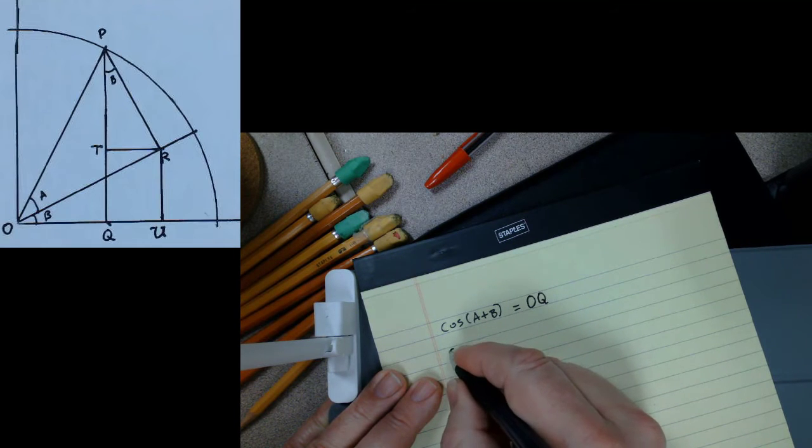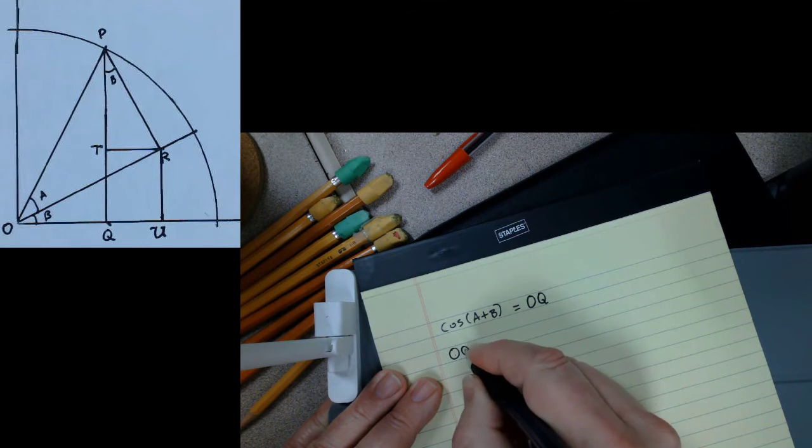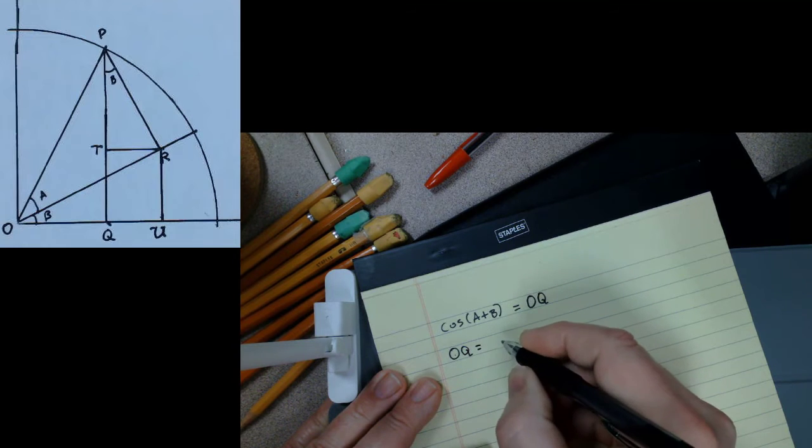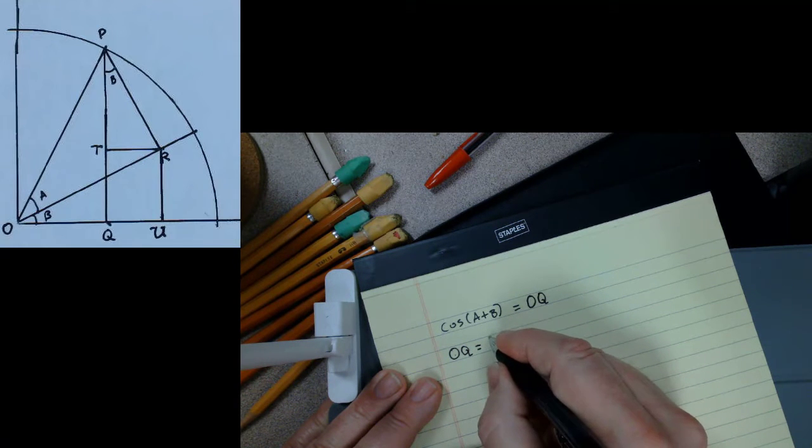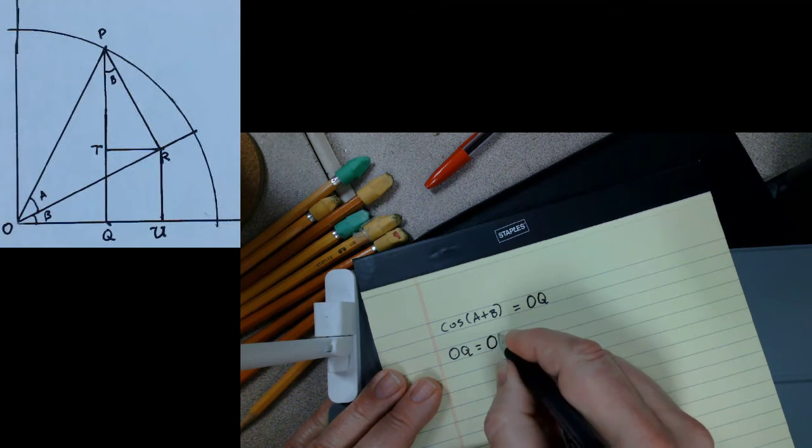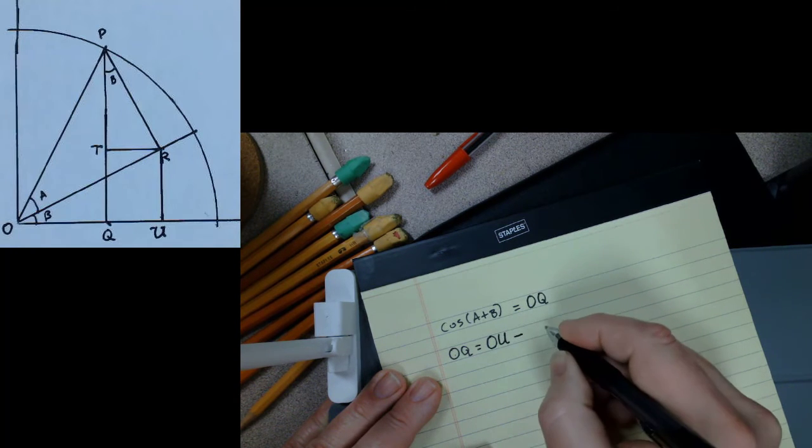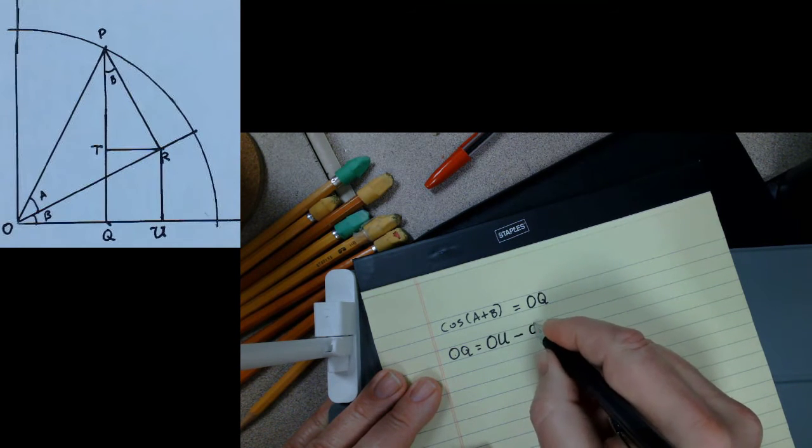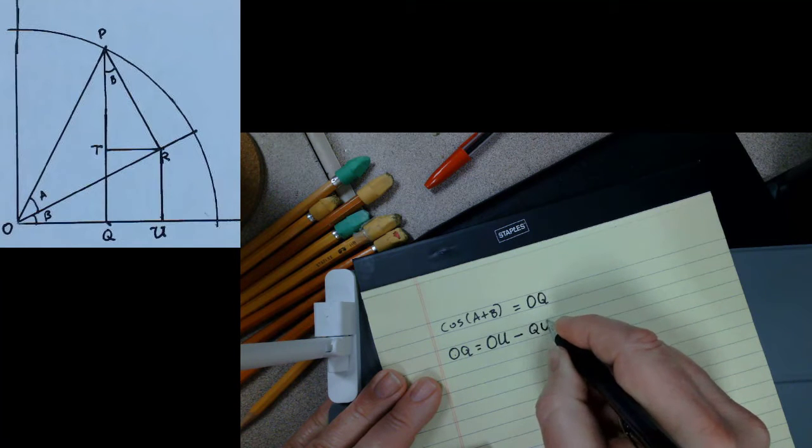Also, we want to notice that OQ is equal to the length of the line segment OU decreased by the length of the line segment QU.